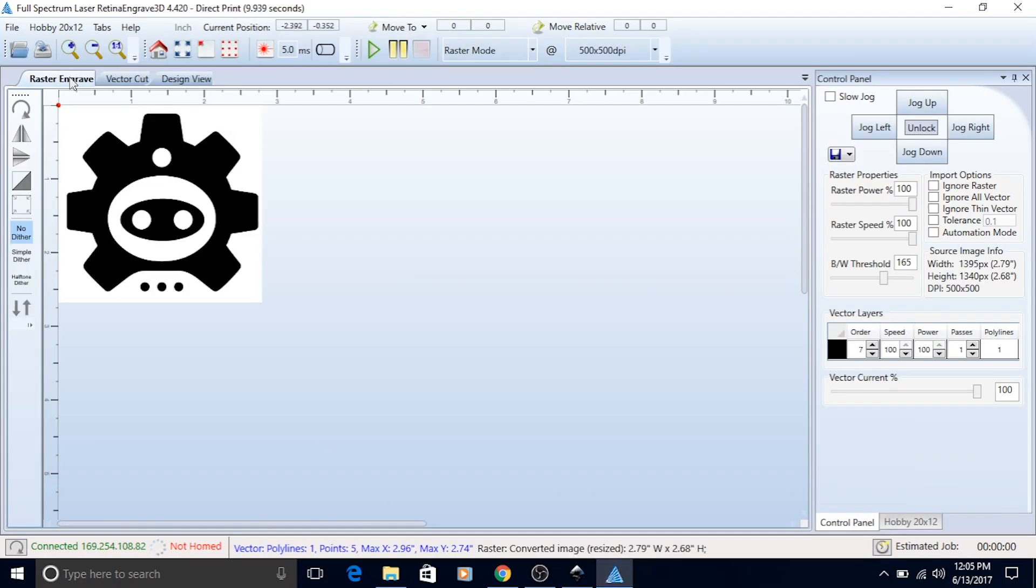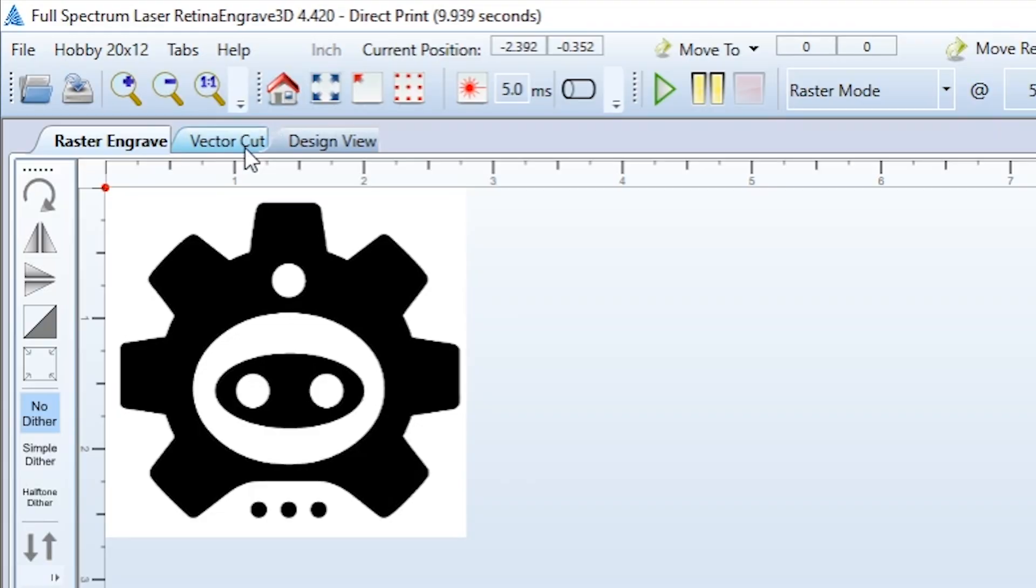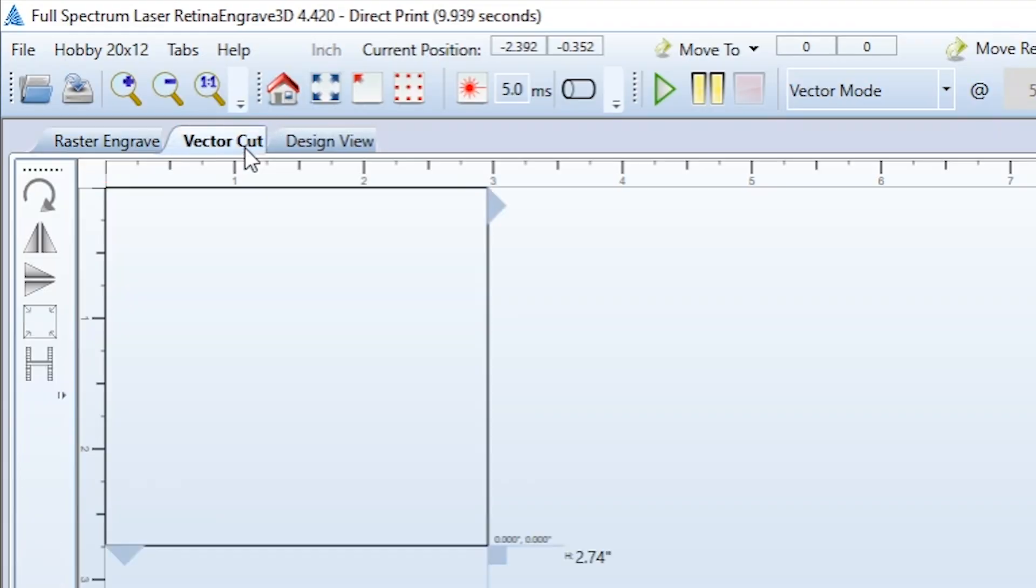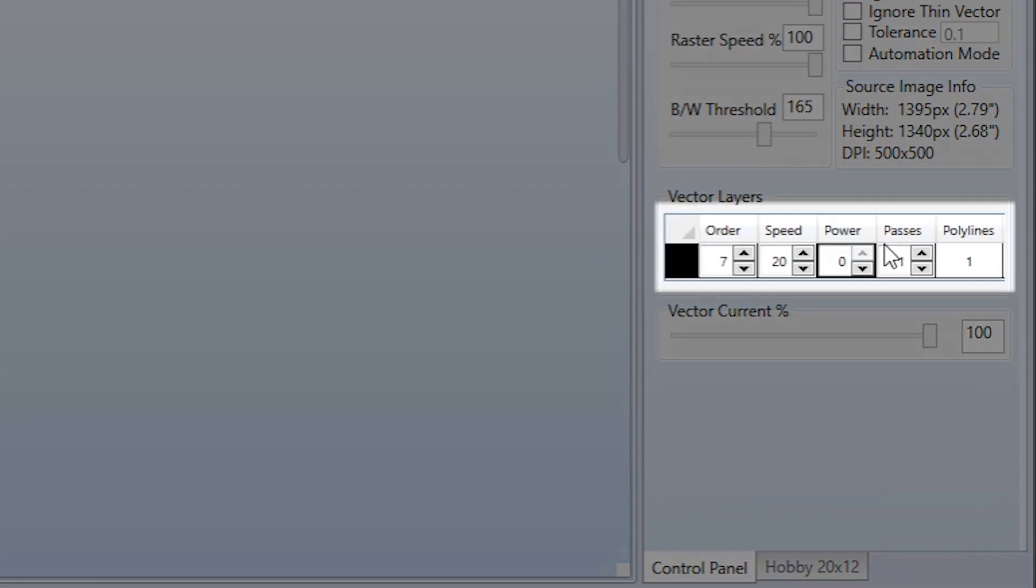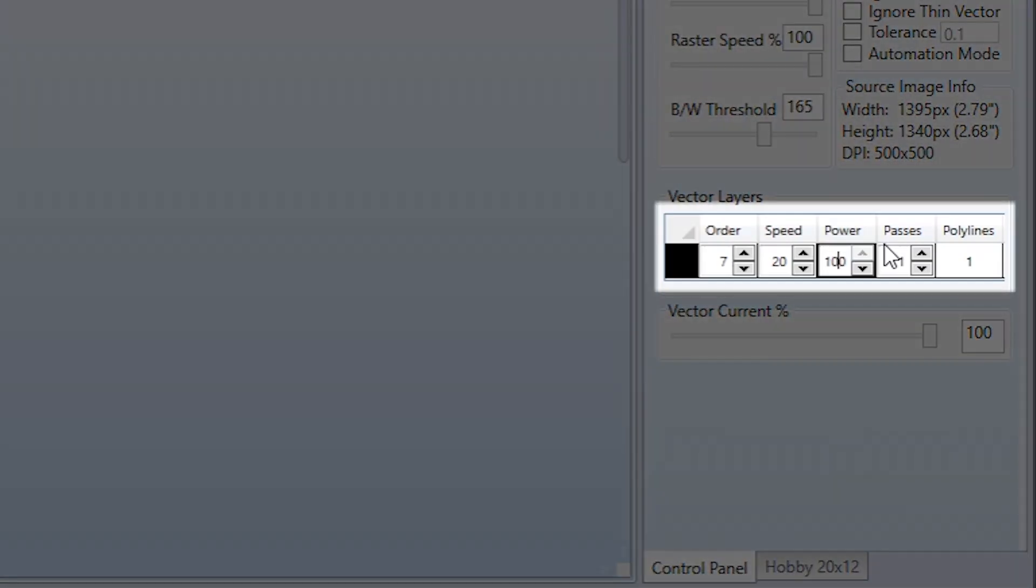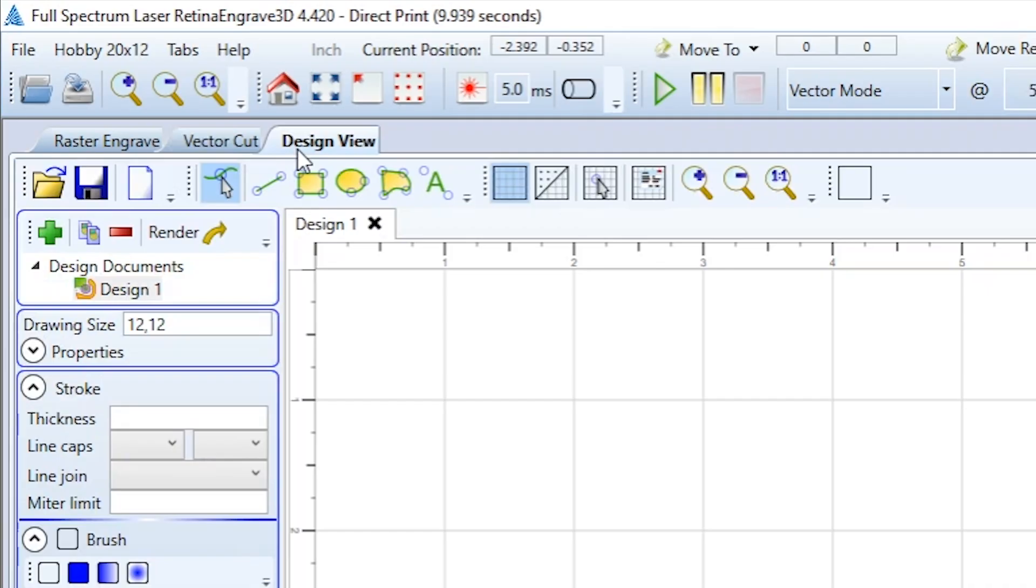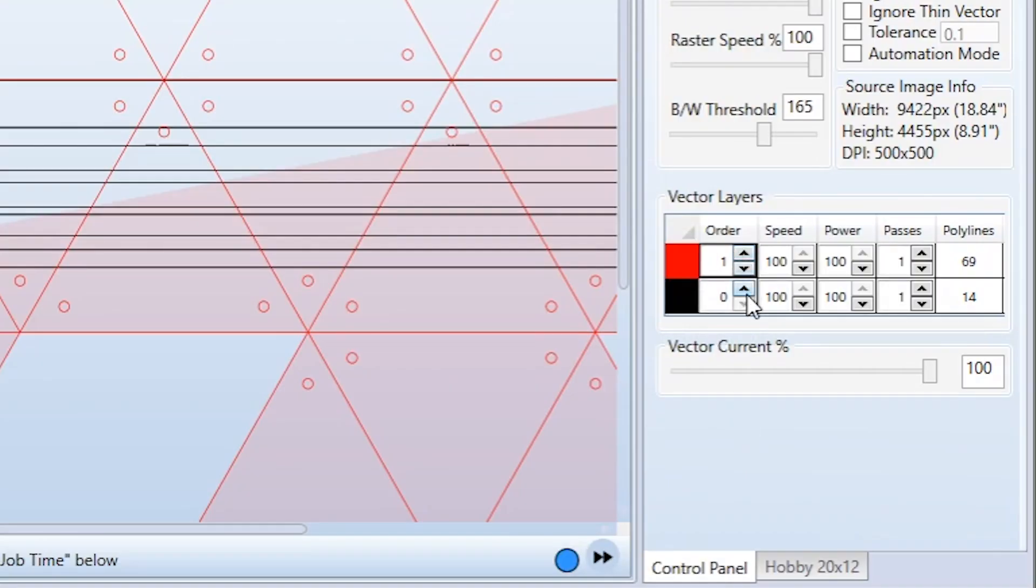In Retina Engrave, we can select from engraving and vector cutting. Engraving will etch the design into your material, whereas vector cutting will cut all the way through. The software also allows us to adjust the cut speed and power, do some simple design work, and select which order we would like to cut our design in.